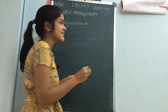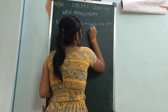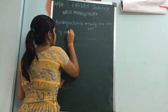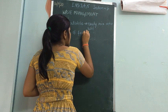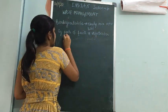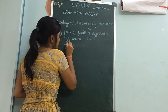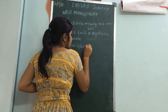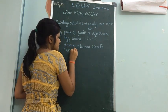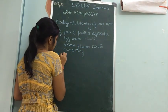Biodegradable waste easily mixes into the soil and is helpful for the environment. Examples include peels of fruits and vegetables and eggshells. The best method for disposing of biodegradable waste is composting. Biodegradable waste should always be kept in a green color bin.